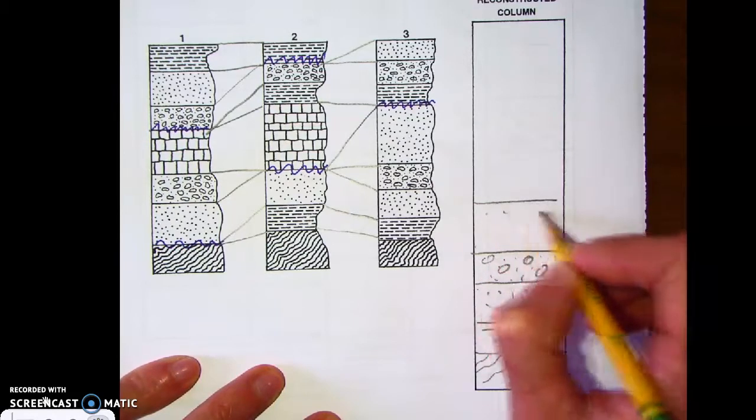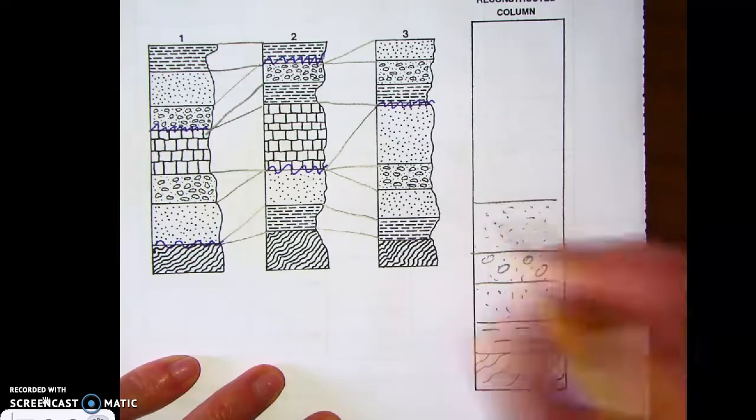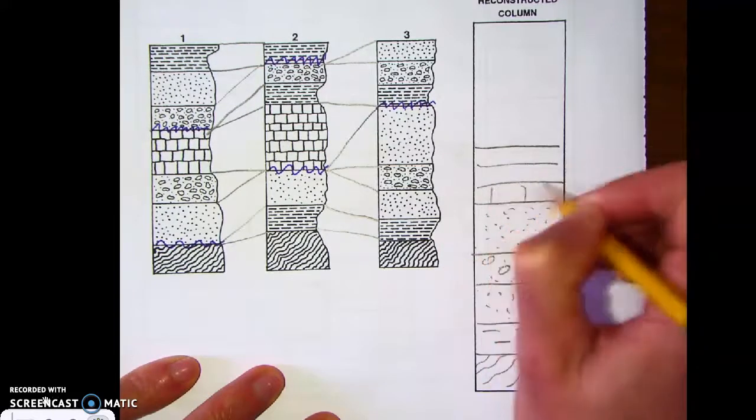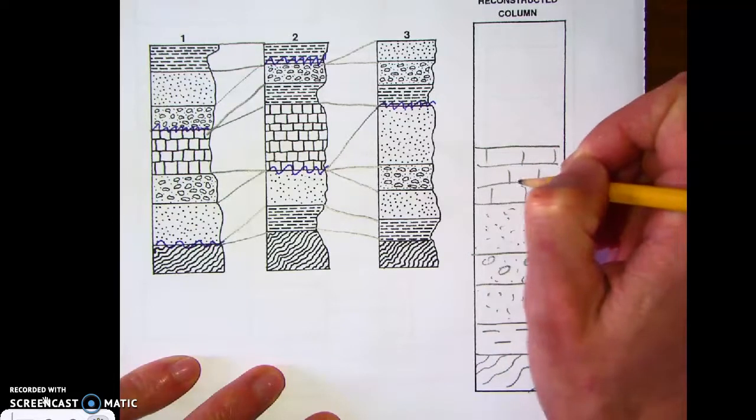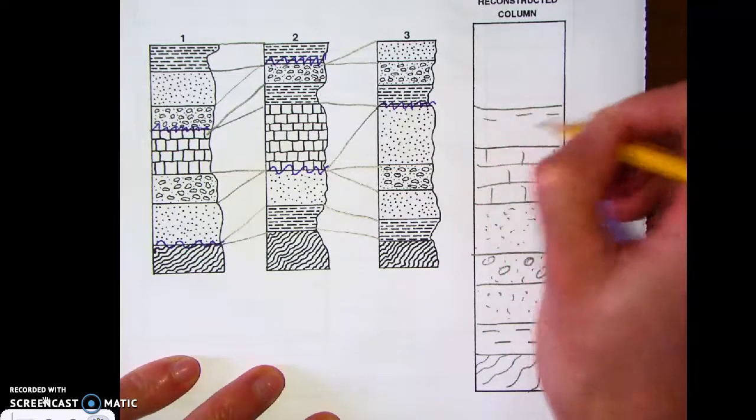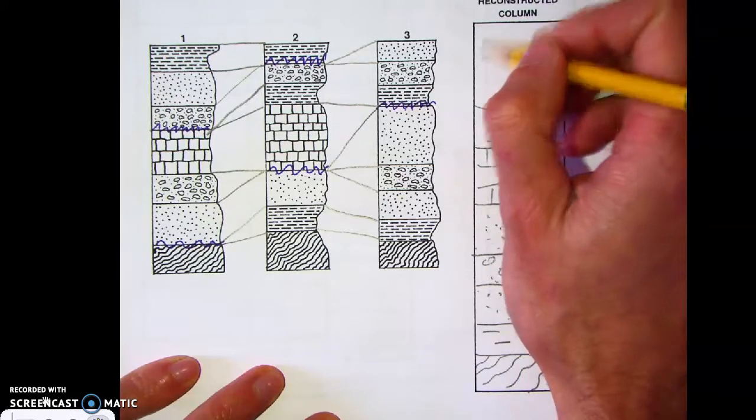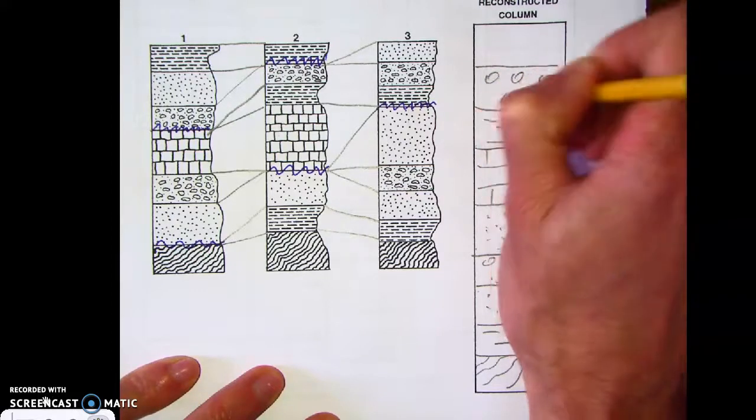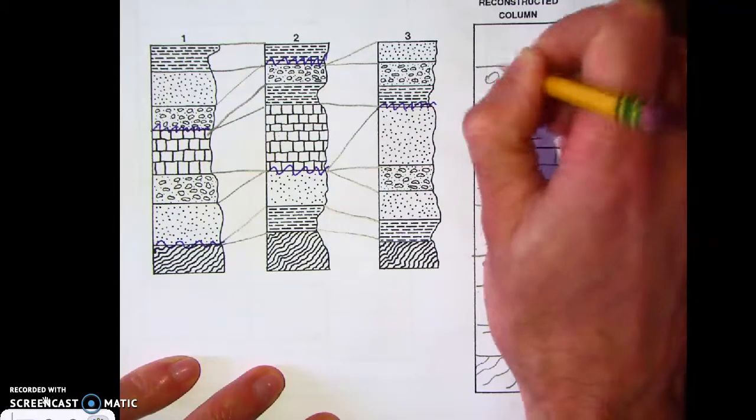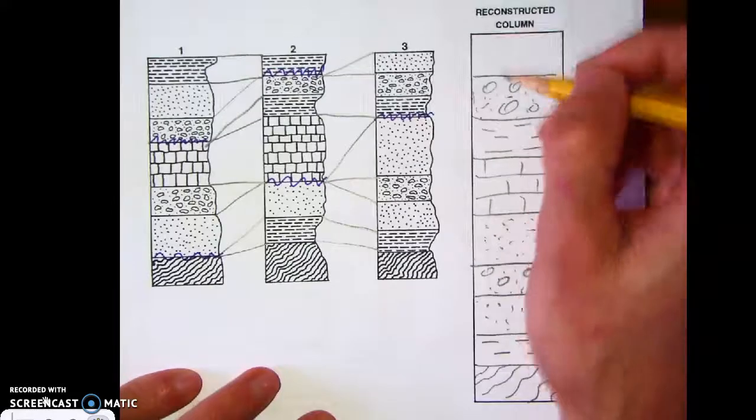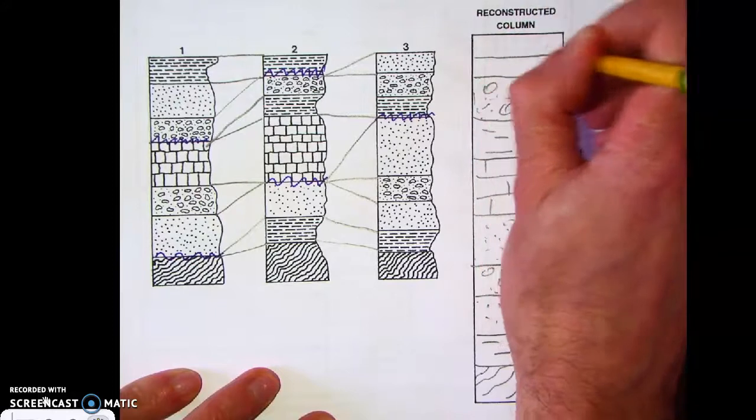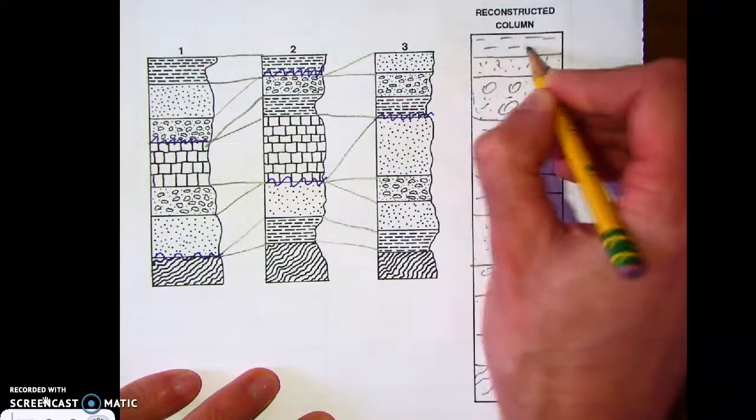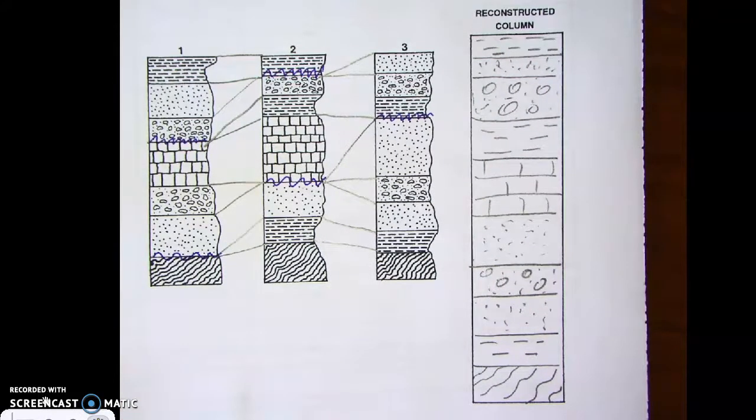And then we keep going up. Now we have a pretty thick layer of sandstone. And then above that, we have limestone. There's our limestone layer. Above that, we have more shale. Then we have conglomerate again. There's conglomerate. And then our last two layers are sandstone at the top of three. And then we have the shale, like that.